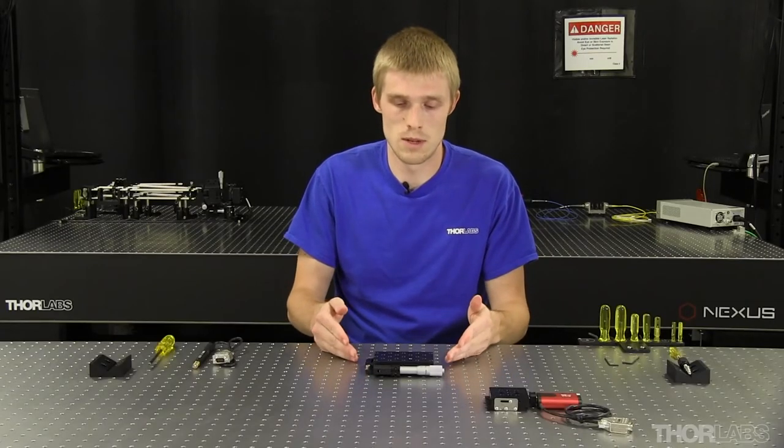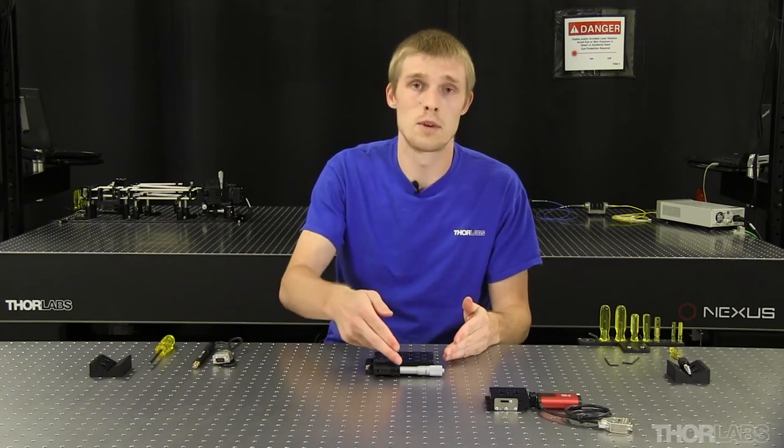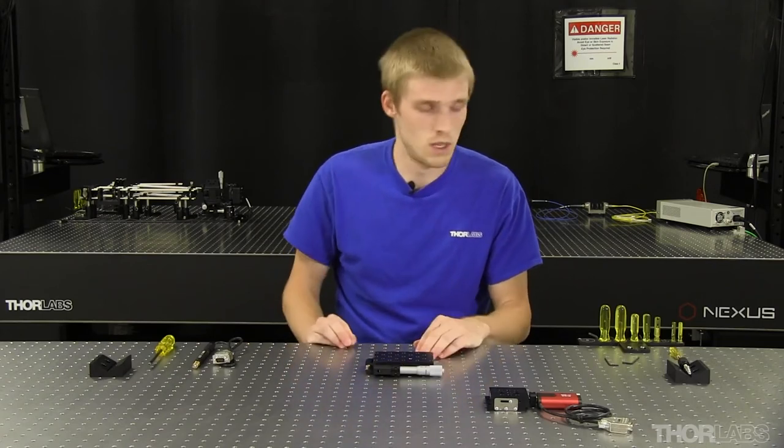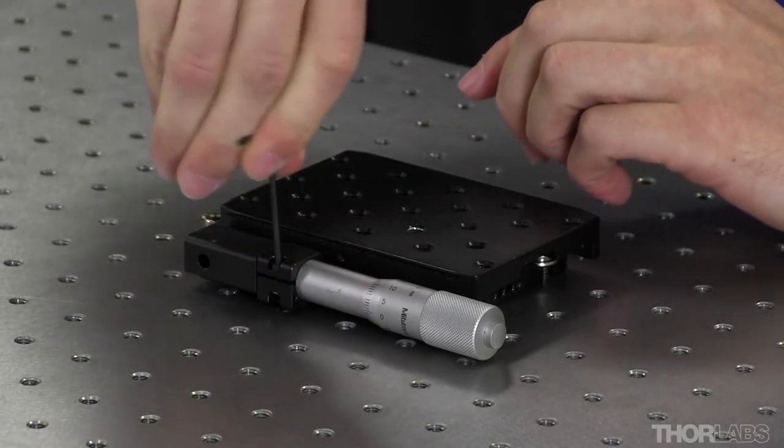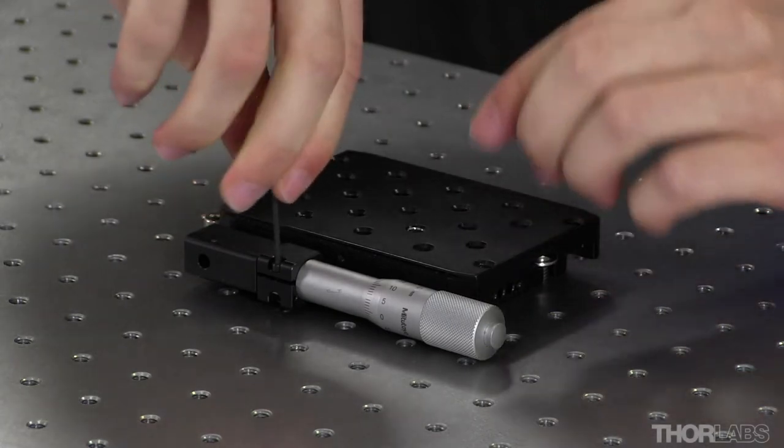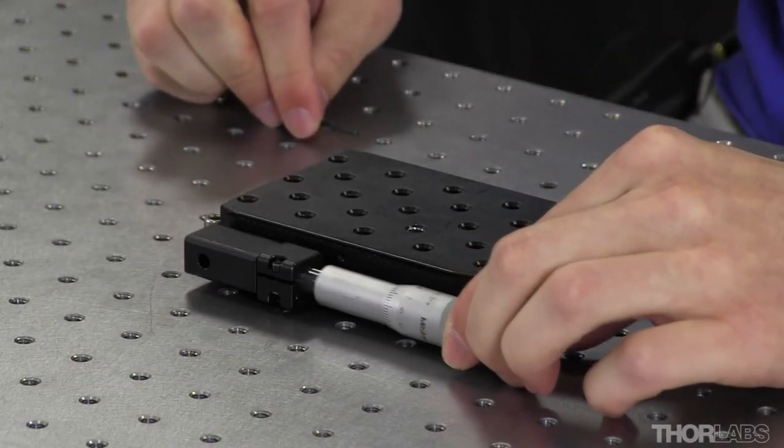So now that the stage is mounted and the micrometer has been retracted all the way back, we will use that same 5/64 inch hex key to loosen the cap screw on the stage's barrel clamp and slide out the micrometer here.